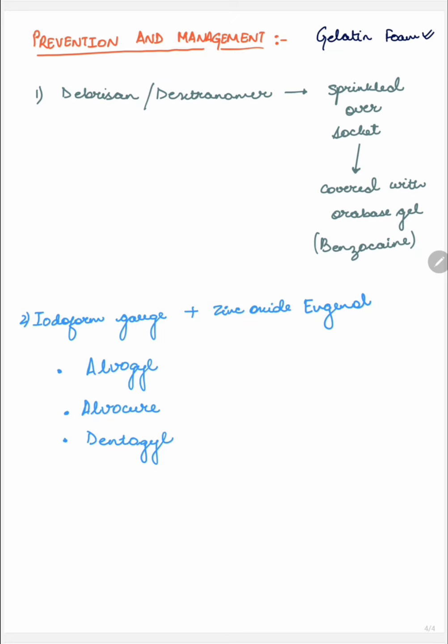Now the management part of dry socket. Debridement and dextranomer are highly hydrophilic dextran polymers which are sprinkled over the socket, and therefore the socket is covered with an Orabase gel. This showed significant pain relief via removing local kinins, exudates, bacteria, and toxins which were responsible for causing pain by irritating the free nerve endings inside the socket.